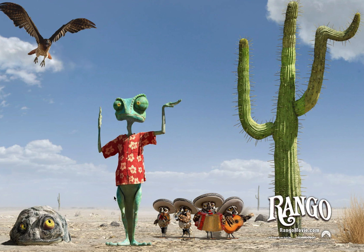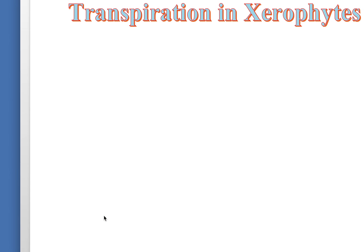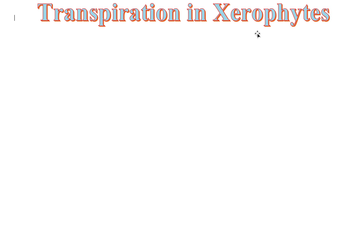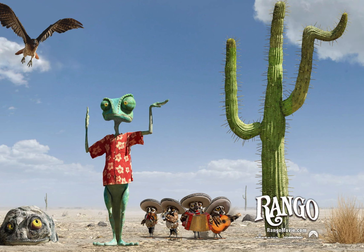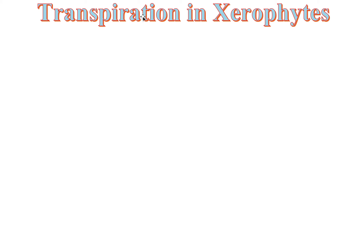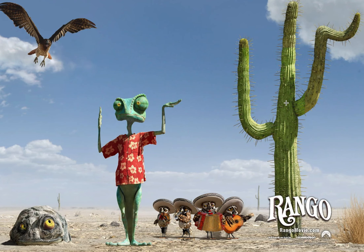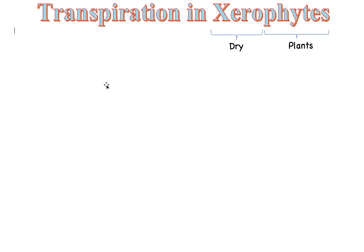If you've ever watched Rango, then you know what it means for a place to be completely out of water — dry as hell. In this video we're going to be talking about how xerophytes, specific kinds of plants like cactuses, are able to survive in places with nearly no water. Transpiration just means sweating for plants — how plants lose water through sweat. Xerophytes can be broken down into 'xero,' which means dry in Greek, and 'phyte,' which means plants — so dry plants. A cactus is one example.